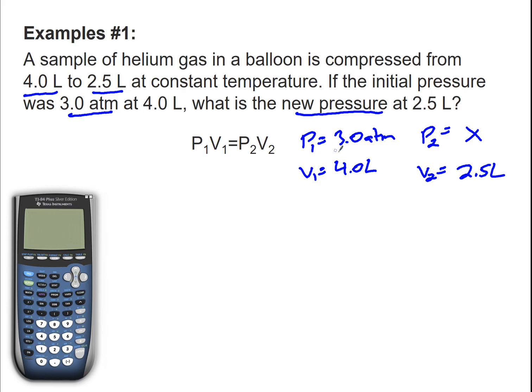So I've plugged in all my variables. One of the most important things is to make sure that you have the same units. If you have any units that are different, you're going to have to convert. I have liters for volume 1 and liters for volume 2, so that's good. My pressure is atm, so that means my answer will be in atm.